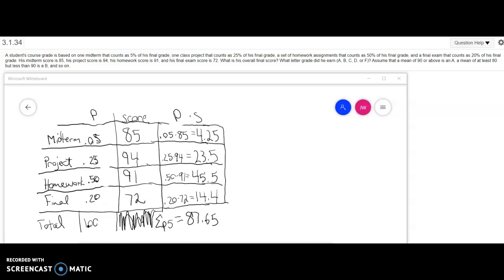So you'll see here I took the information given in the problem and made a table of it with the percent and the score. So midterm, the proportion, I wrote it as a proportion instead of a percent, is 0.05 of the grade or 5% of the grade and he got an 85 on it.